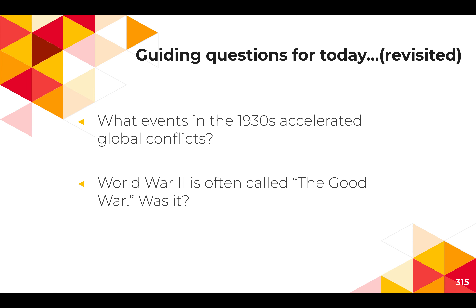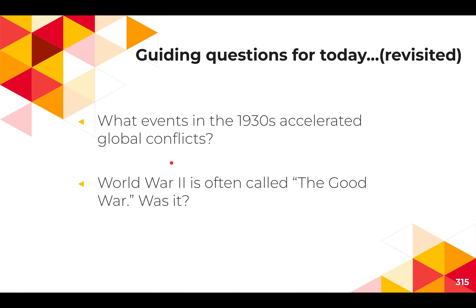We'll talk about the remainder of the war in a few extra videos — the end of it militarily, and also what the war looks like on the home front. Hopefully this video answered the guiding questions. We can consider the extent to which U.S. military preparedness was attempting to do what they saw as good, and also the previous period of American isolationism as something the American public thought was the right thing to do — obviously a very subjective question. We'll keep going with World War II on the home front and look at the end of World War II in future videos. Thanks so much for watching and see you soon.